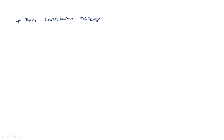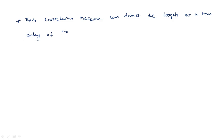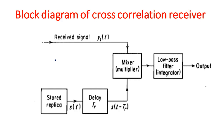Using the above concept — nothing but the input signal multiplied by the delayed replica and passed through a low pass filter — that type of receiver can detect targets at a time delay of tr. This is the cross correlation receiver. Correlation detection means we are designing a block diagram separately to detect targets using this cross correlation method.